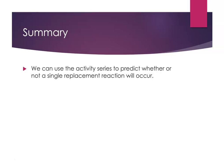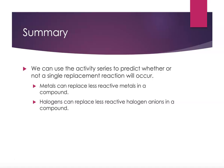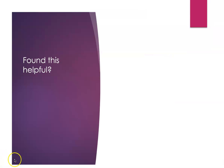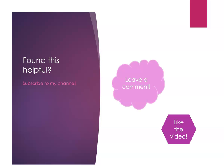Let's summarize what we learned in this webcast. We can use the activity series to predict whether or not a single replacement reaction will occur. Metals can replace less reactive metals, but not more reactive metals. And halogens can replace less reactive halogen anions in a compound. If you found this helpful, subscribe to my channel and leave a comment and like the video.